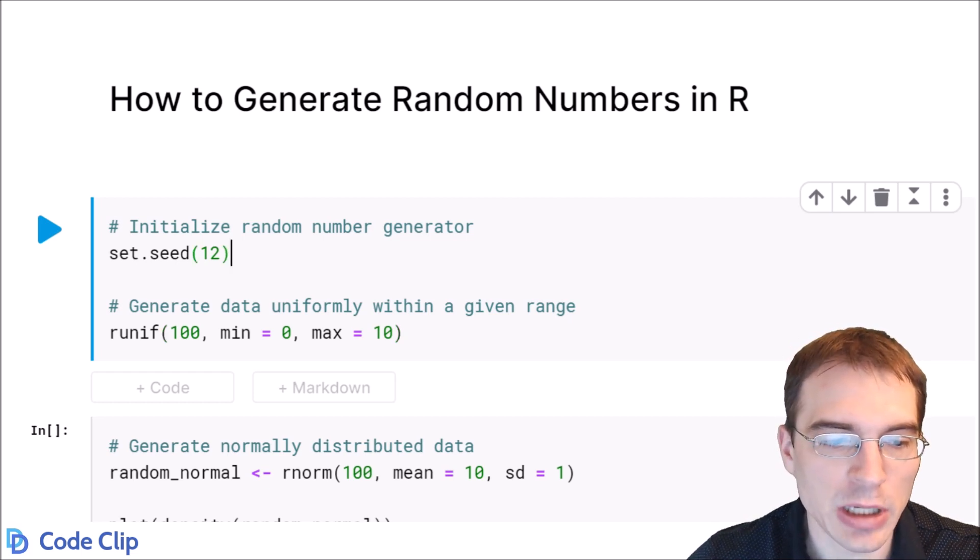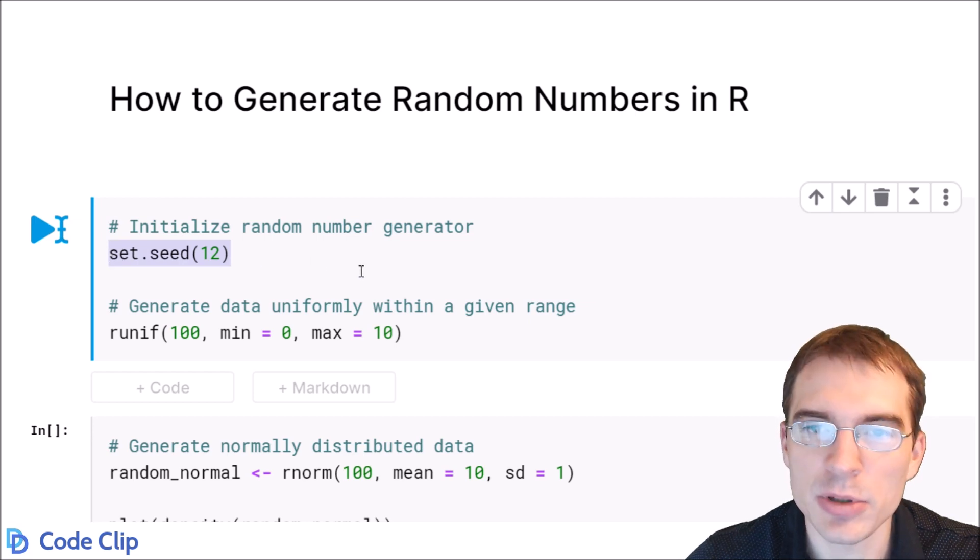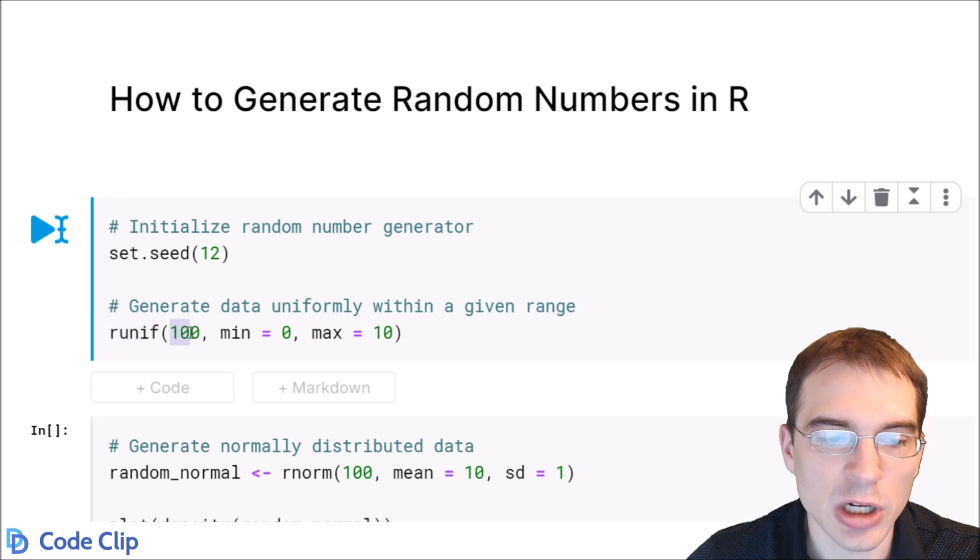We're going to start by initializing the random number generator by setting the seed. This just means that if we run the same code again we'll get the same results. And to generate the numbers we use the runif function which means generate random numbers from the uniform distribution. The first argument is how many numbers we're going to generate, so we're going to get 100 here.